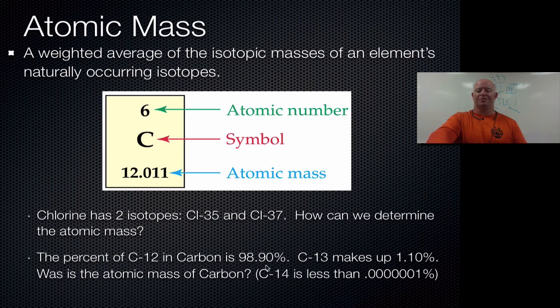It's a weighted average because in nature we have almost all carbon-12. The percent of carbon-12 in carbon is 98.9 percent. Carbon-13 makes up 1.10 percent, and carbon-14 is less than 0.00001 percent. There's not a lot of carbon-14 or carbon-13, so if you do this average it makes sense that you're going to end up getting a mass that is closer to 12. What we need to do here is what we call a weighted average.